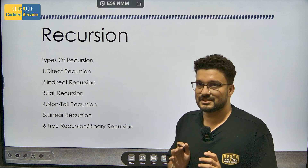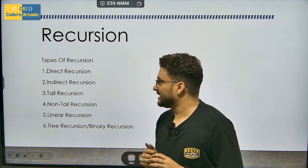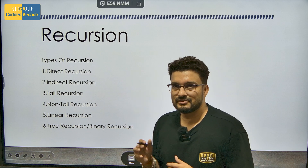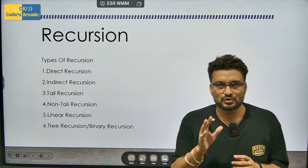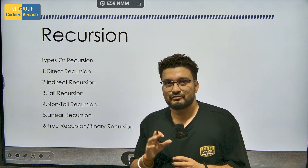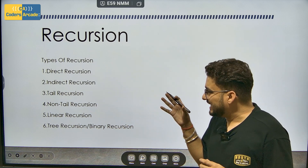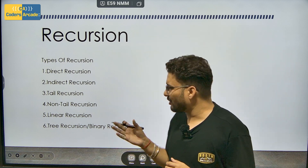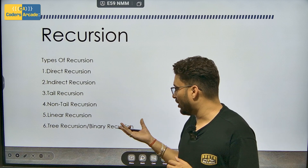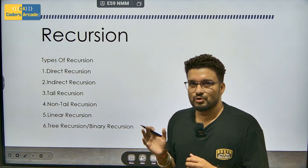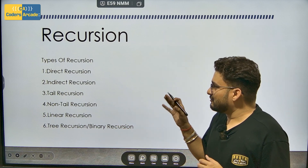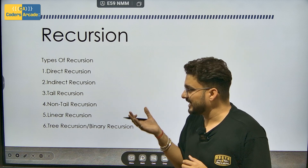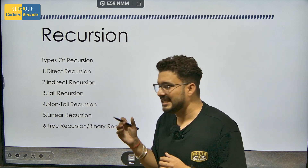There are six types of recursion. First one is direct recursion, second one is indirect recursion, third one is tailed recursion, fourth one is non-tailed recursion, fifth one is linear recursion, and sixth one is also known as tree recursion or binary recursion. I will explain one by one — what is direct, indirect, tailed, non-tailed, linear, and tree.